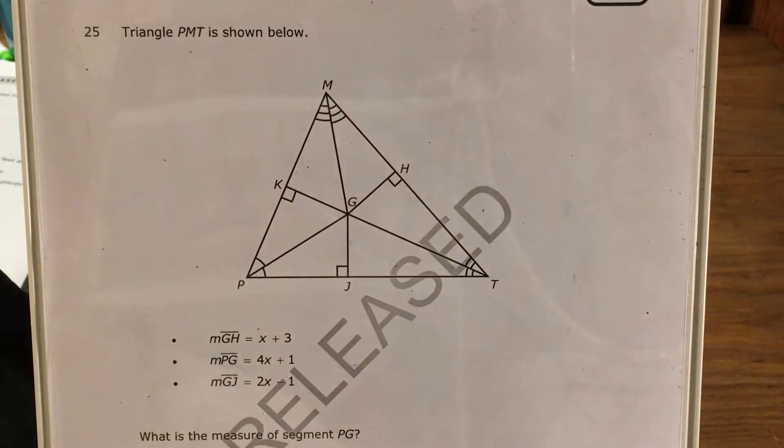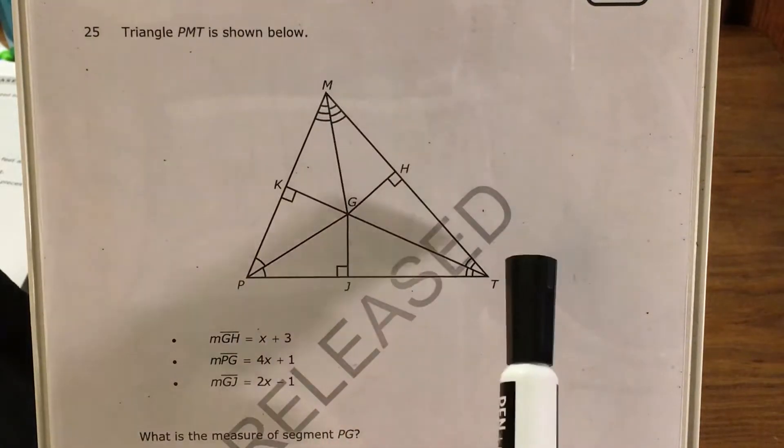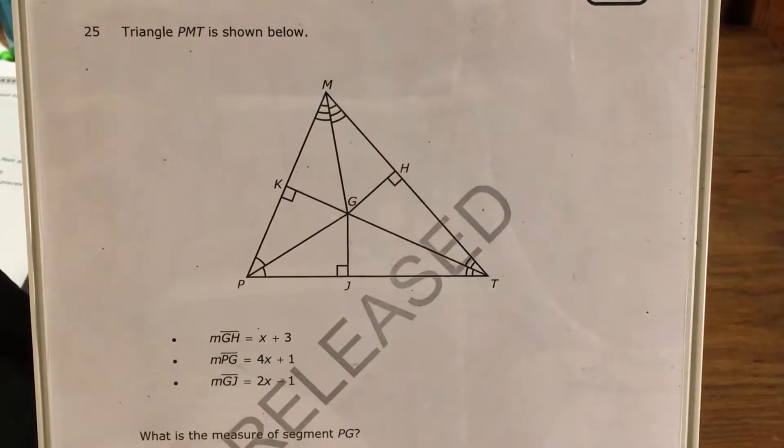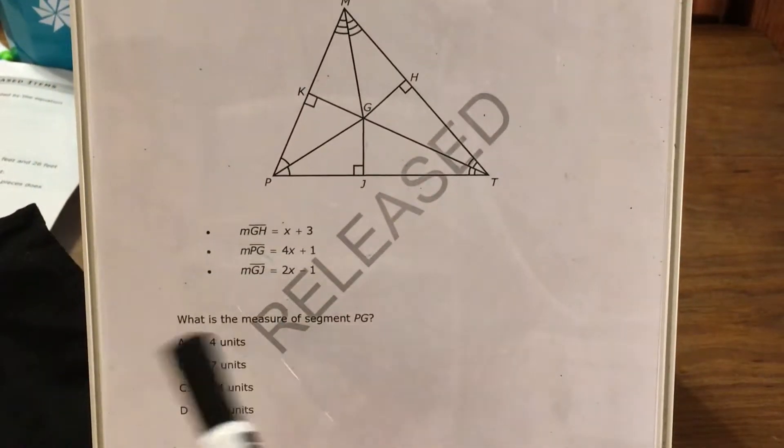What's up math scholars and math haters? This is Mr. W. Today we're going to tackle question 25 in the math three questions that North Carolina released this past school year. The question gives us triangle PMT. It tells us the length of a few of the line segments inside this triangle written as expressions, and we're supposed to find the exact measure of segment PG in numbers.